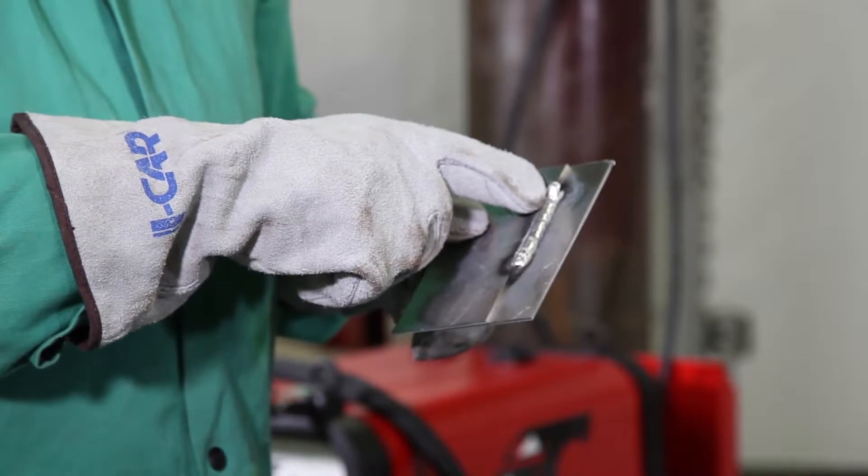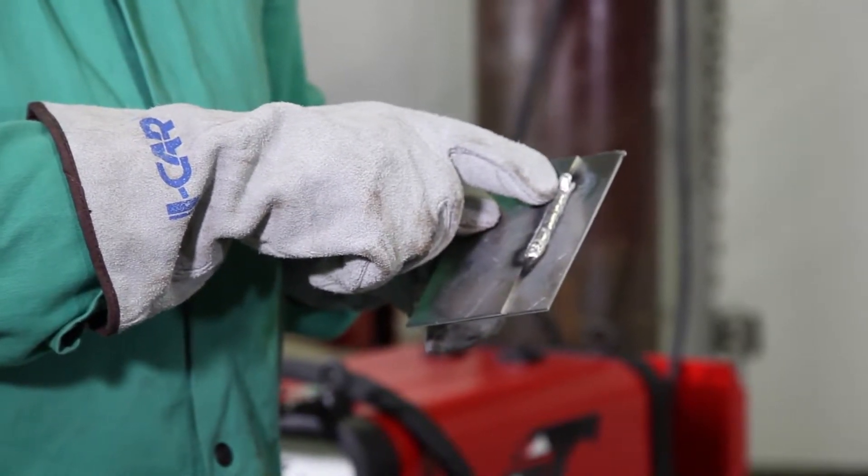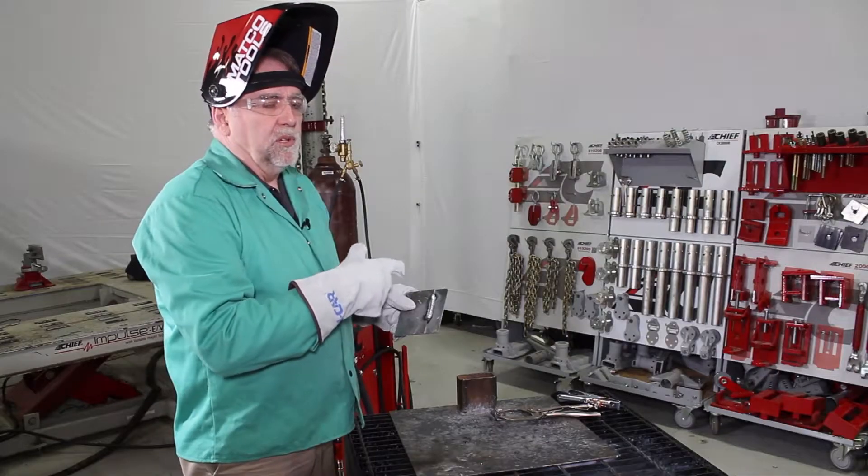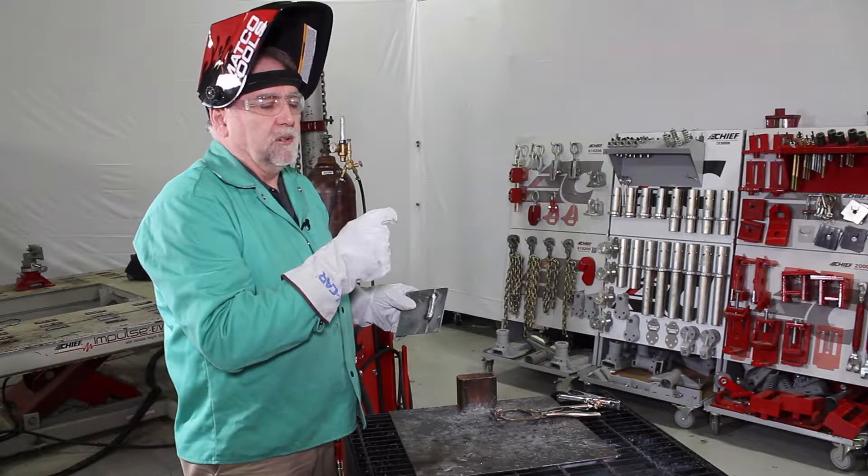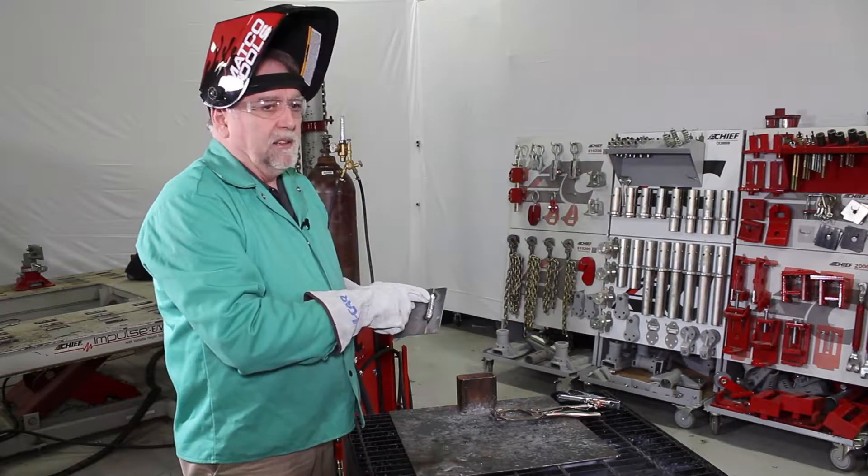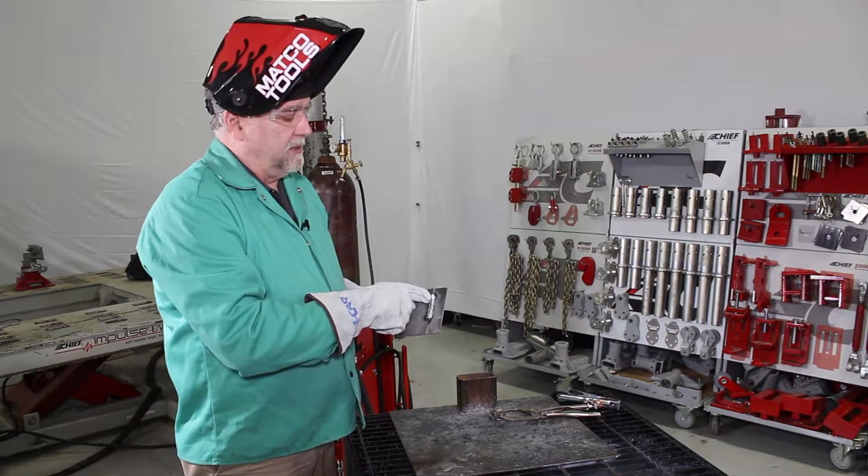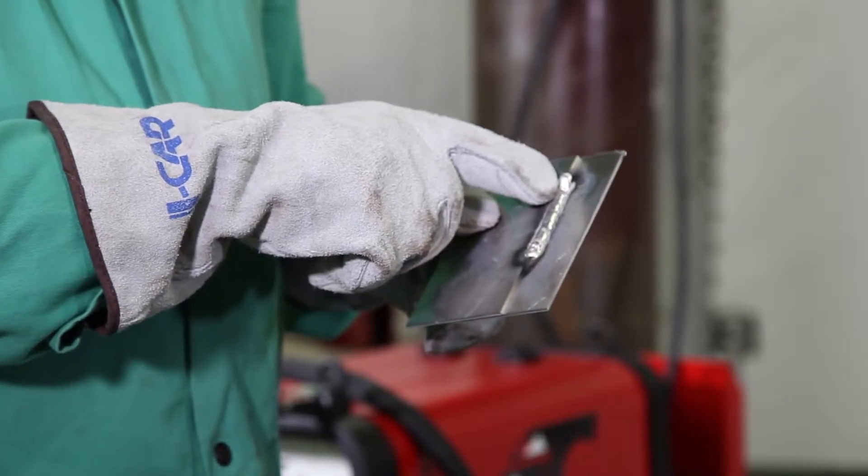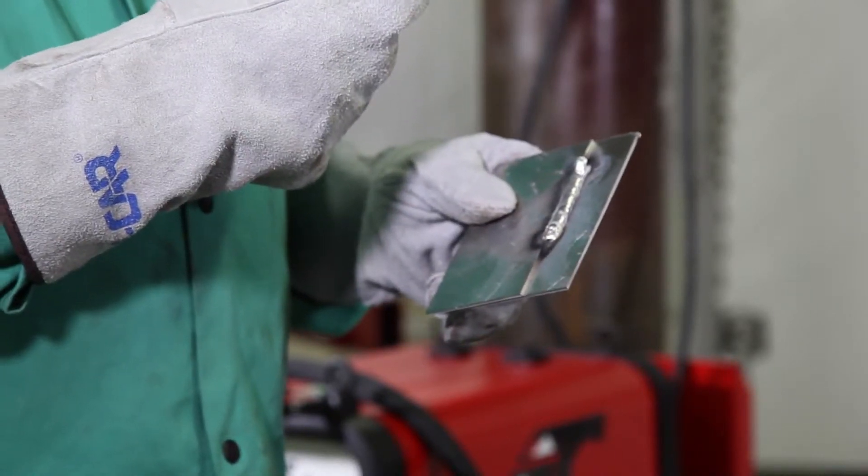This is where the hot start function on the machine can help us out. As we're using a higher amperage weld for the first second or two of the weld to not eliminate this but reduce it and get us out of this cold start faster. This is why I stayed in one spot and built this knob up before I started moving. I waited until the weld had enough heat to establish a puddle into the aluminum.